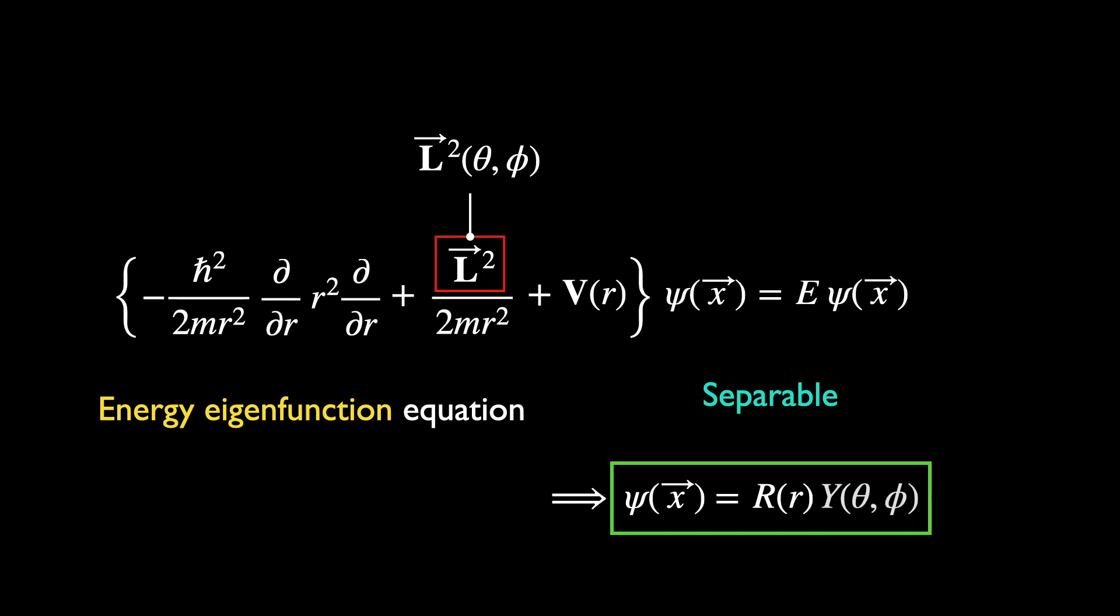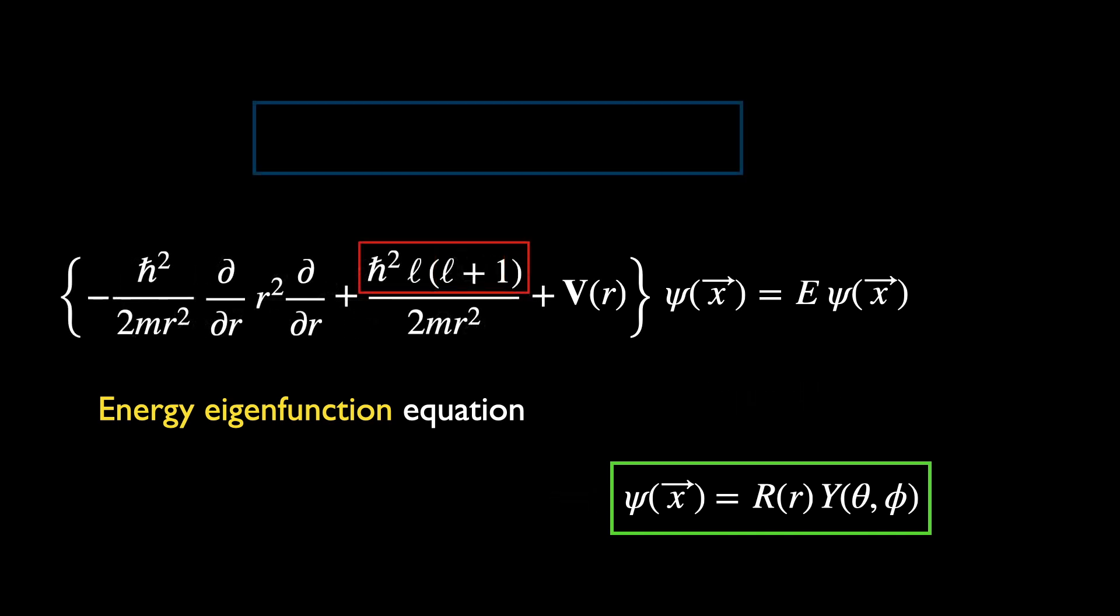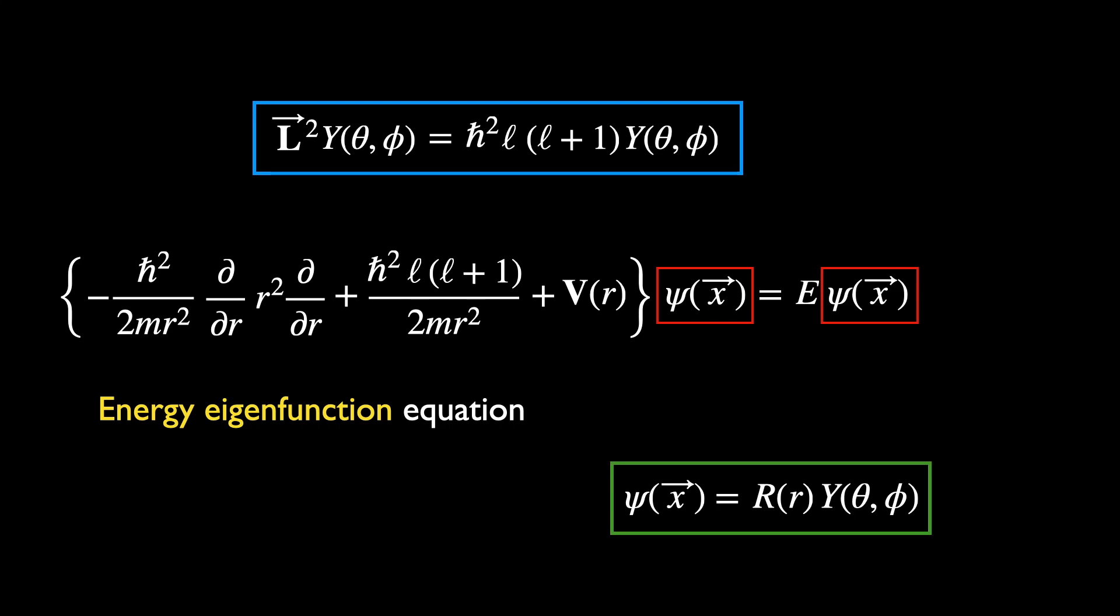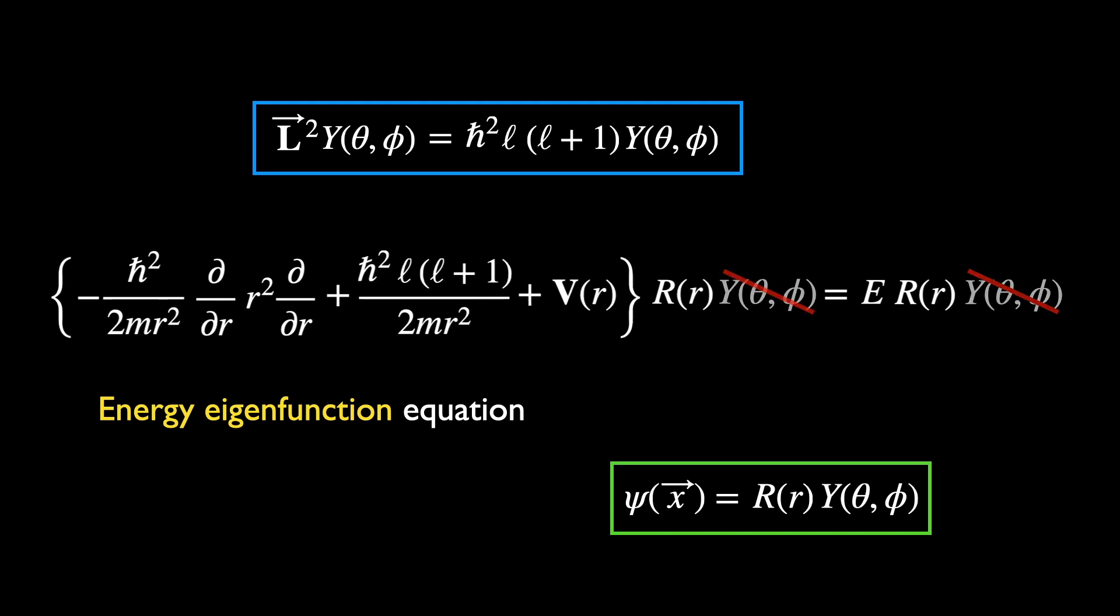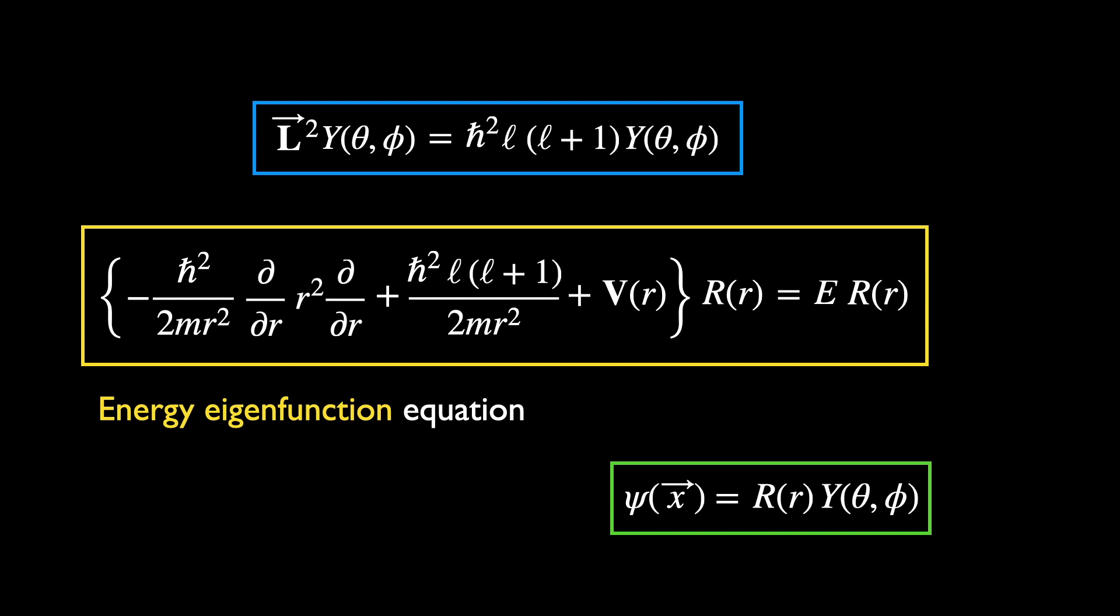If we let the angular function Y be the eigenfunction of L-square, then we could simply replace L-square by its eigenvalue. The eigenfunction of L-square then simply drops out. So the differential equation for energy eigenfunctions is reduced to one involving a function of only r. This is what it means for an equation to be separable. One could break up the problem into two, each involving a different subset of variables.